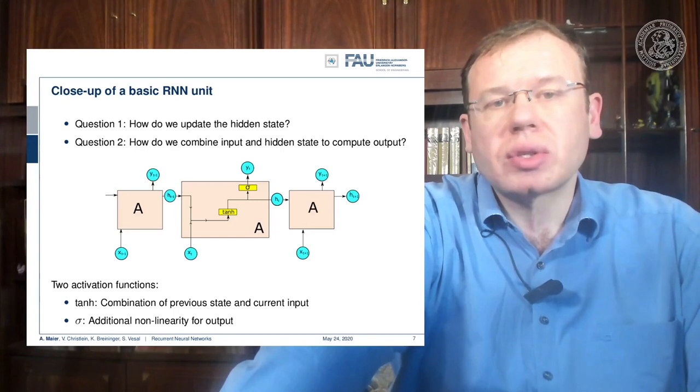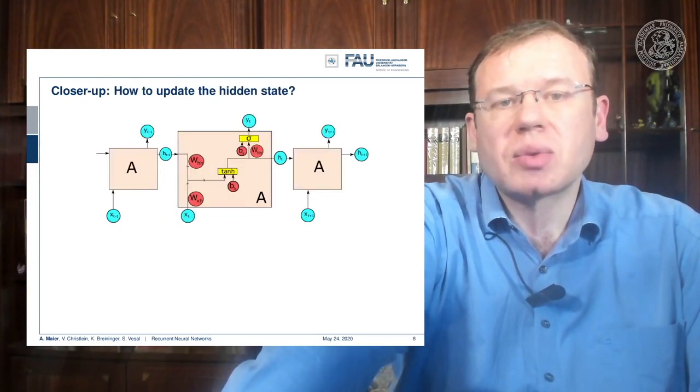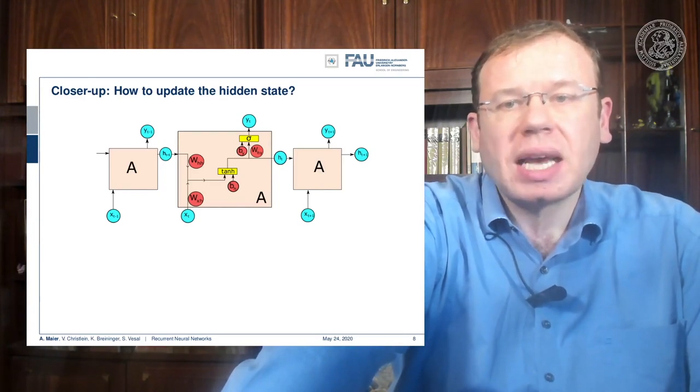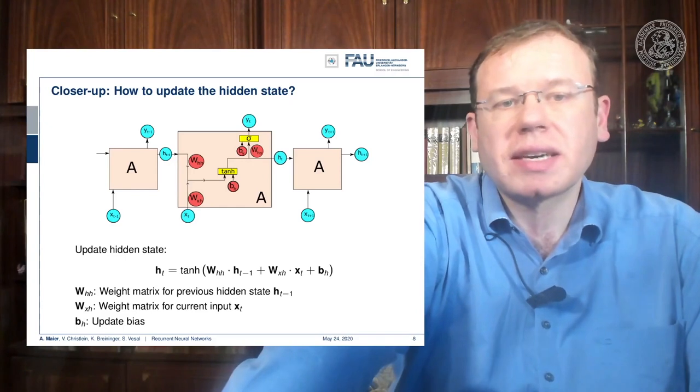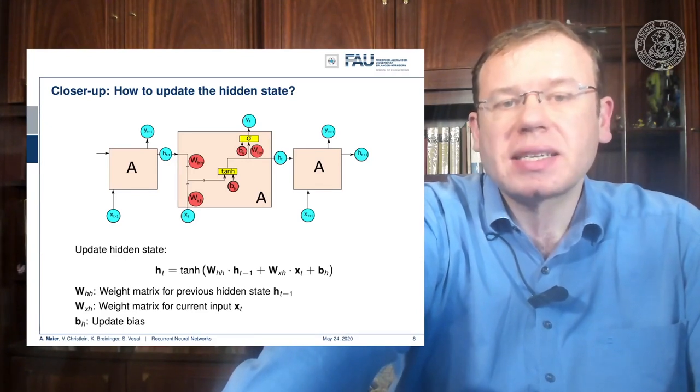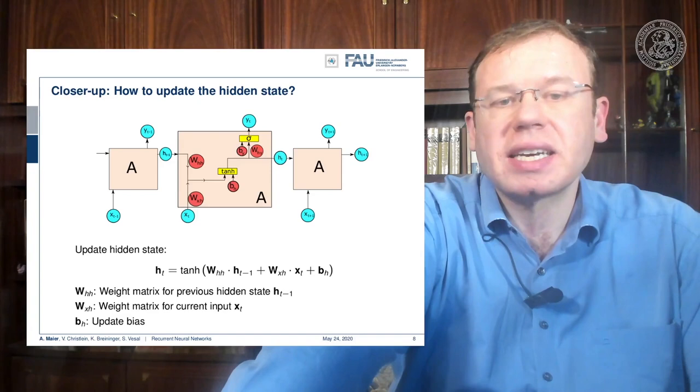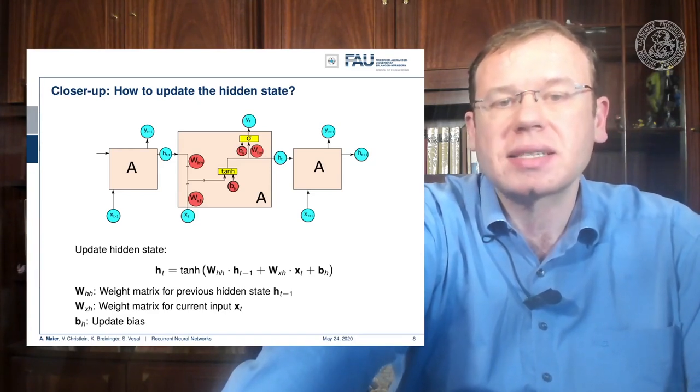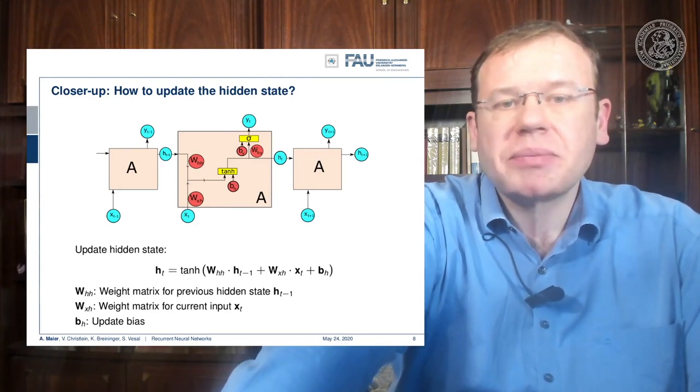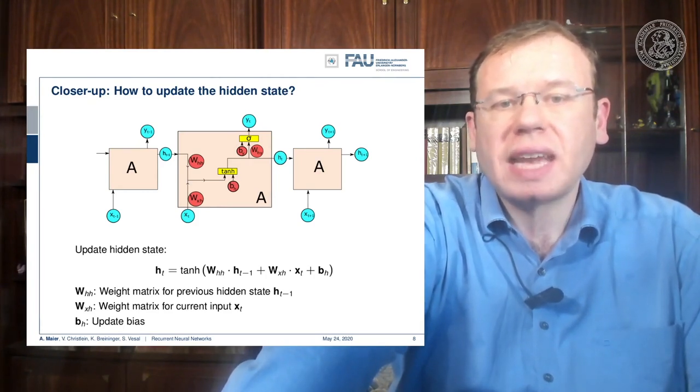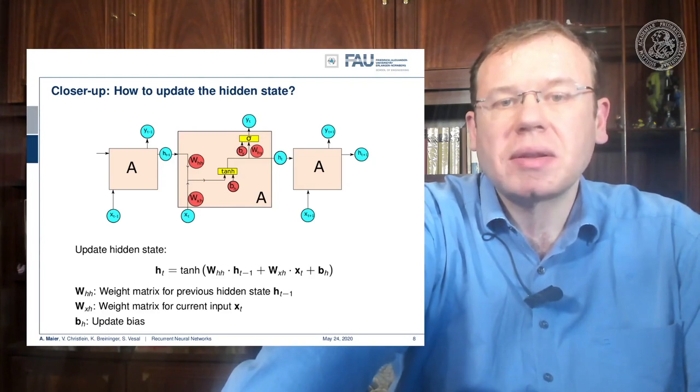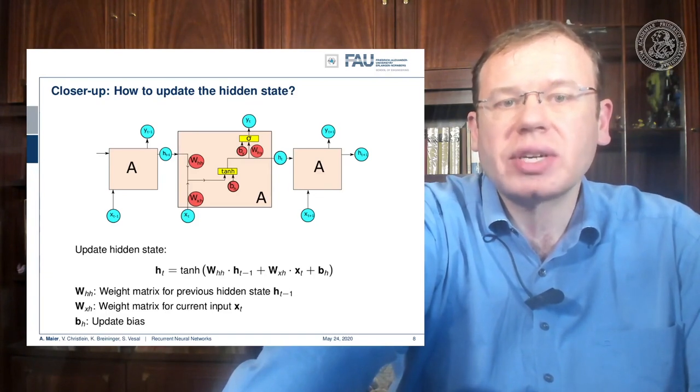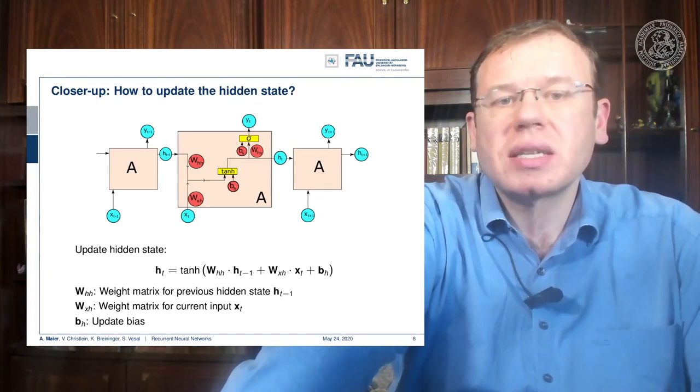In order to do so, of course, we need weight matrices, and those weight matrices are essentially depicted here in red. And we can look at them in a little more detail. If we want to update the hidden state, this is essentially the hidden state to hidden state transition matrix WHH times the last hidden state, plus the input to hidden state conversion matrix WXH times XT plus the bias. And this is then fed to the non-linearity, which then produces the new hidden state.